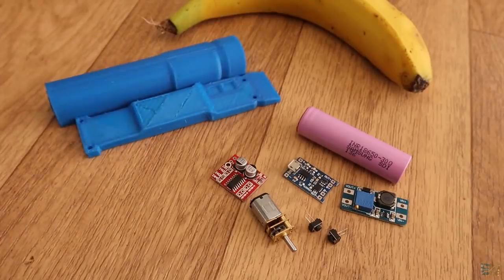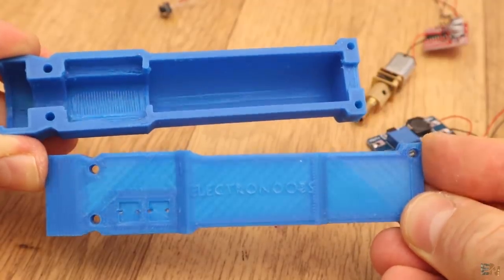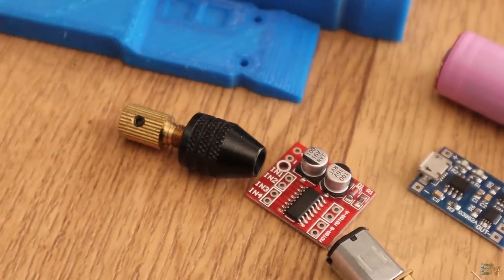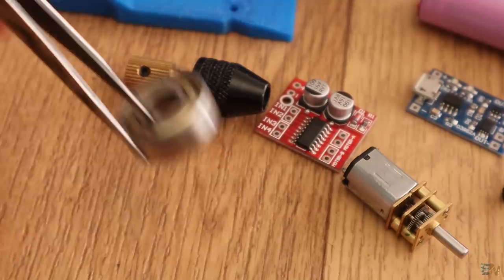Okay, so finally we need the 3D printed case to put everything inside, but we also need this drill bit support, two push buttons, and a 22mm bearing.